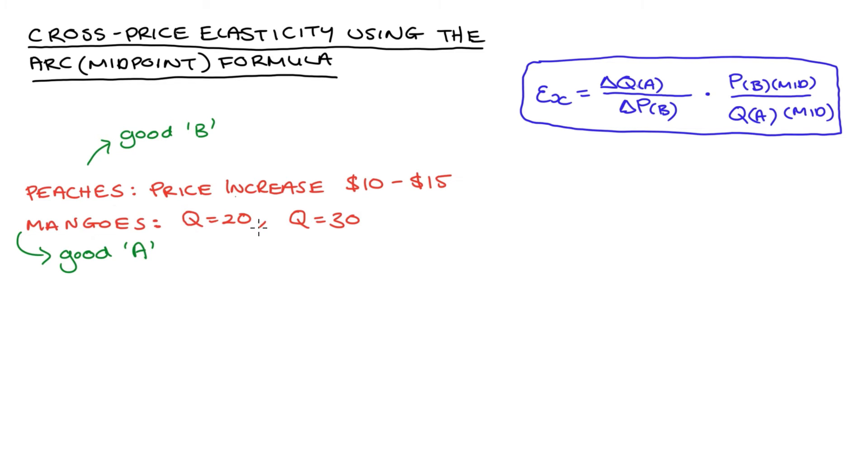Now when I'm given elasticity problems like this, I just like to find each individual part of our formula first, and then join it all together at the end. So let's start by thinking about the change in the quantity of good A, so that's our mangoes. Now the change in quantity is equal to, we just take the new value minus the old, so that's 30 minus 20, so that's 10.